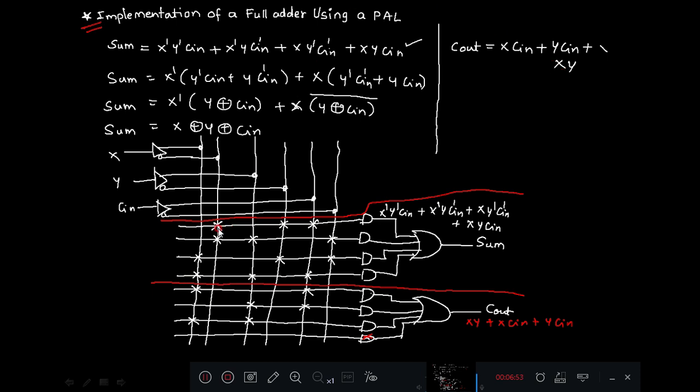These four product terms X dash Y dash CIN, X dash Y CIN dash, X Y dash CIN dash, and X Y CIN are computed by an AND array which is connected to an OR gate. And this OR gate will give you sum expression implementation. OR array is fixed and AND array contains programmable connections. After programming it will appear like this. On paper we will realize and try to understand.